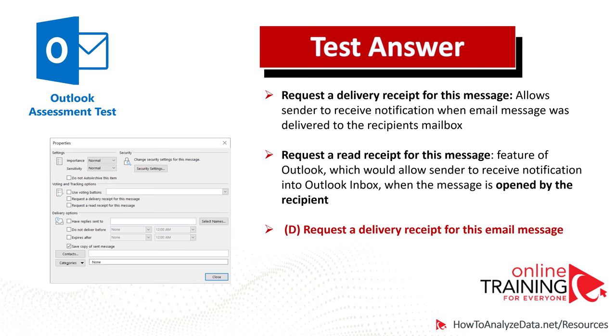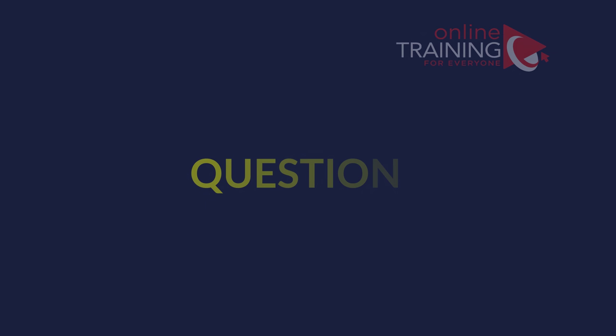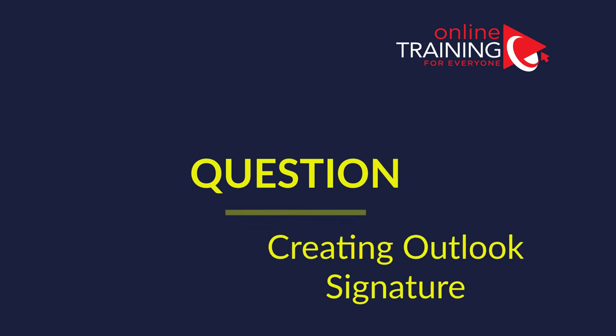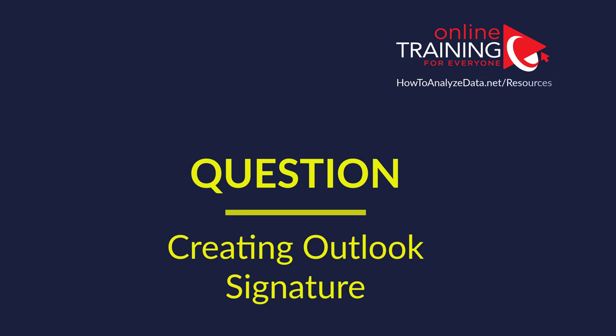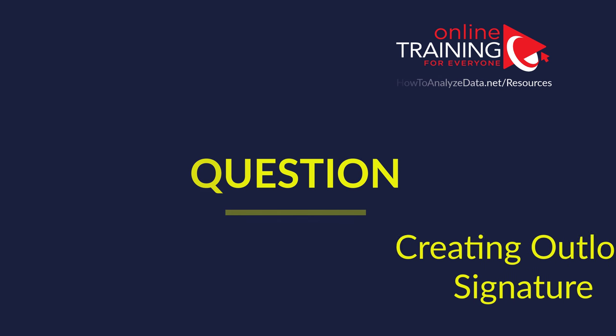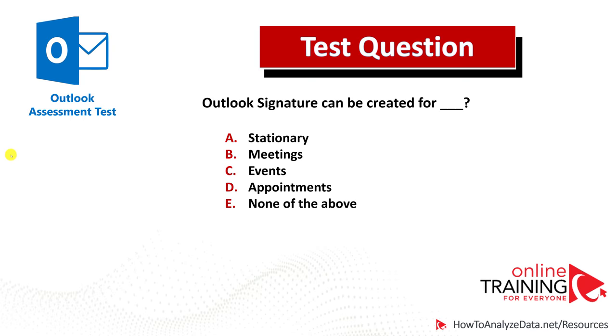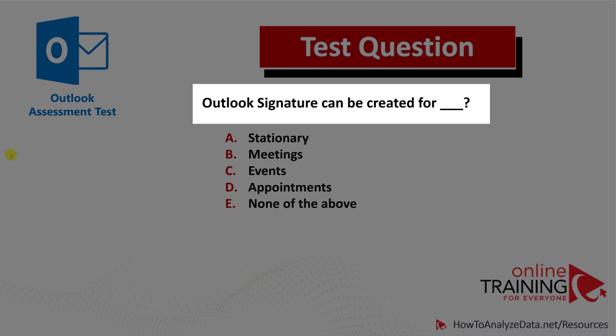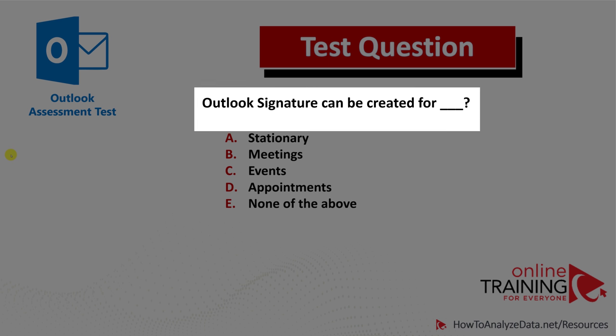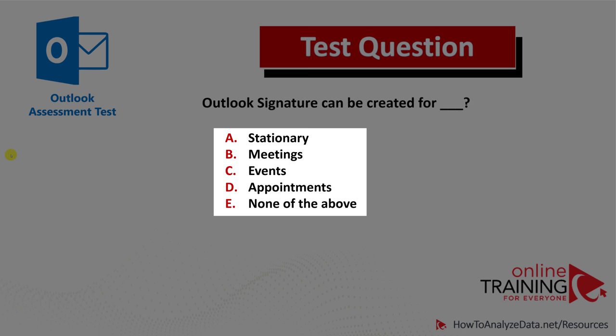I truly hope you've nailed this question. But if you would like to practice more, please make sure to check out my ebook in the description section of this video. Now let's look at a tricky question a lot of people get wrong during the test. Outlook's signature can be created for: Stationery, Meetings, Events, Appointments, or None of the Above. Do you think you know the answer?